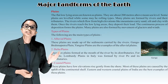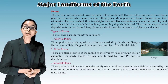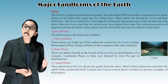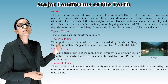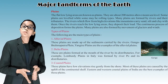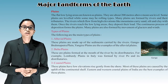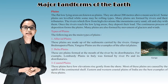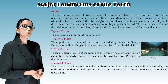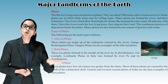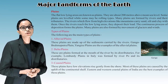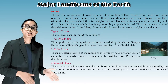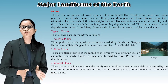Types of plains: alluvial plains are made up of sediments carried by rivers — the Ganga, Brahmaputra, and Yangtze plains are examples. Delta plains are formed at the mouth of rivers by distributaries — for example, the Lombardy plain in Italy, formed by the river Po. Coastal plains have low elevation and rise gently from the shore; most are caused by the uplift of the continental shelf. The eastern and western coastal plains of India are the best examples.